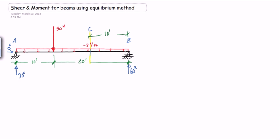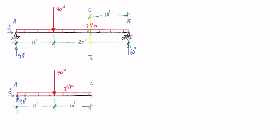What we do is we cut our beam at point C, right there, and draw a free body diagram of either side. I'm going to show both sides so you can see how you get the same answer regardless of which side you choose. I've cut the beam on the left side, right at point C. In order for this to stay in equilibrium, we have to replace the cut at point C with the internal forces. We're going to have a shear V at point C, a moment M, and an axial force A.